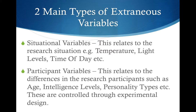Second, participant variables — these relate to differences in the research participants, also known as individual differences, such as age, intelligence levels, personality types, etc. These are controlled through experimental design, which we will go on to later.